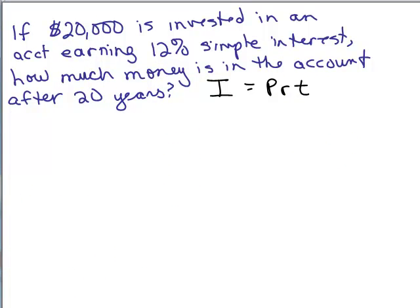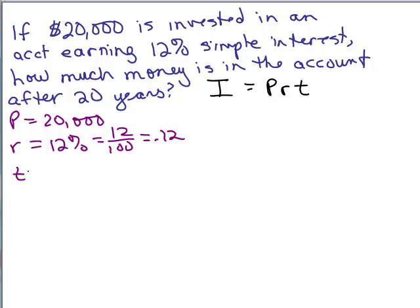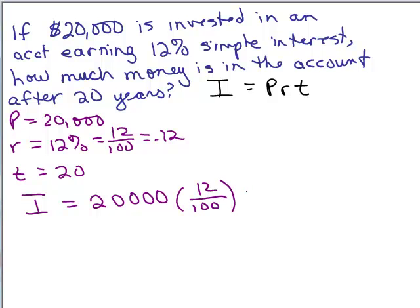So here's the first problem. You're investing $20,000 at 12% for 20 years. So we've got this formula I = PRT. The principal is 20,000, the rate is 12%, which you could write as 12/100 or 0.12, and the time is 20 years. So we put that in the formula: I equals 20,000 times 12/100 times 20.